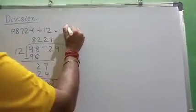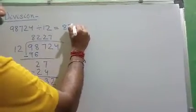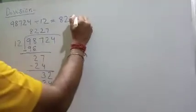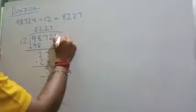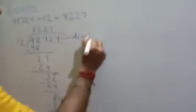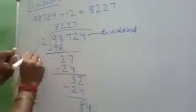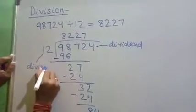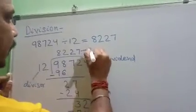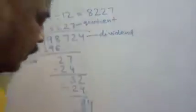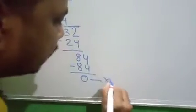So this is our quotient: 8,227. Here I have written: dividend, this is our divisor, this is called quotient, and this is called remainder.